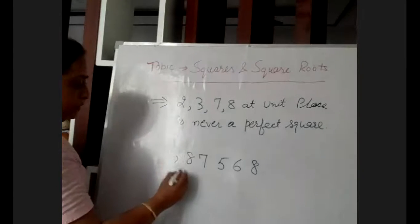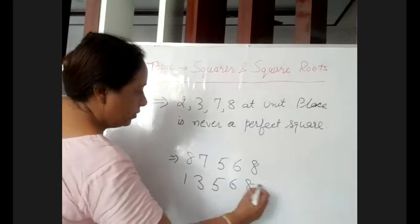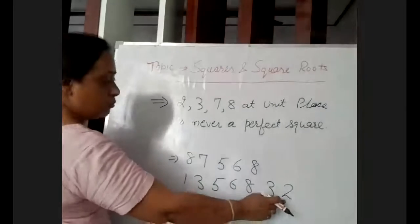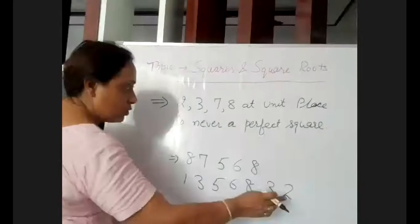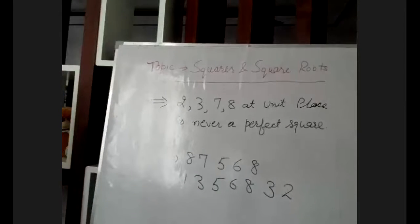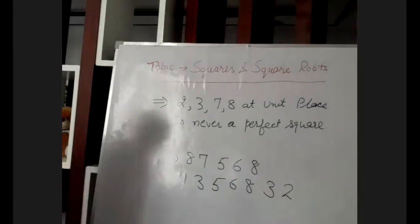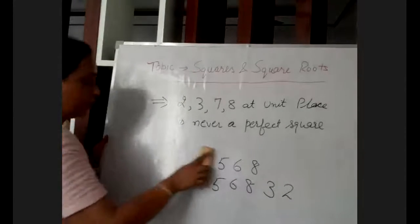Let's consider two more examples. 1,356,832 — the last digit is 2, so this number is not a perfect square. This property will be used to solve exercise 3.2.